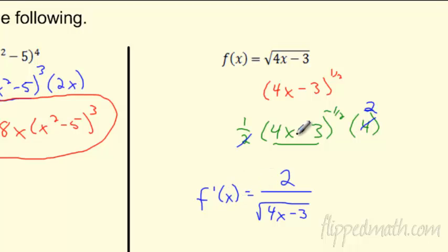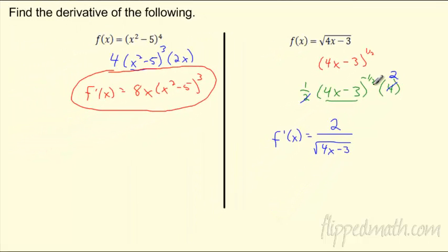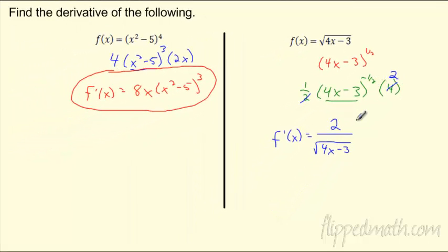So I did that pretty quick. The 1/2 and the 2 — the 2 stays on top, the negative moves to the bottom, and then I rewrote that back to the square root. Pretty cool.